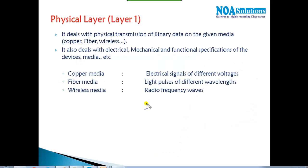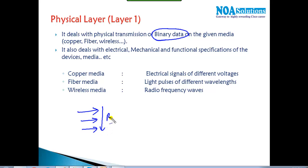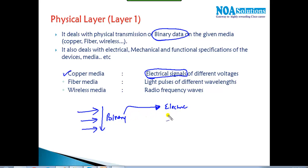The final layer is the physical layer, which defines the transmission of data over the wire — the physical transmission of binary data. All the information you send is converted into binary format. These binary signals travel as electrical signals over copper wires such as UTP or coaxial cables, as light signals over fiber cables, or as radio frequency signals over wireless media.